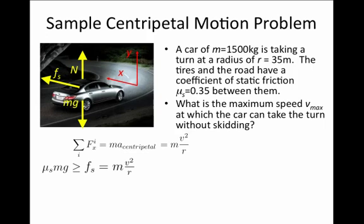So I have an inequality now. I have μs times mg is greater than or equal to mv squared over r. If I cancel the mass on both sides of this equation, I have that v squared is less than or equal to μs times r times g.